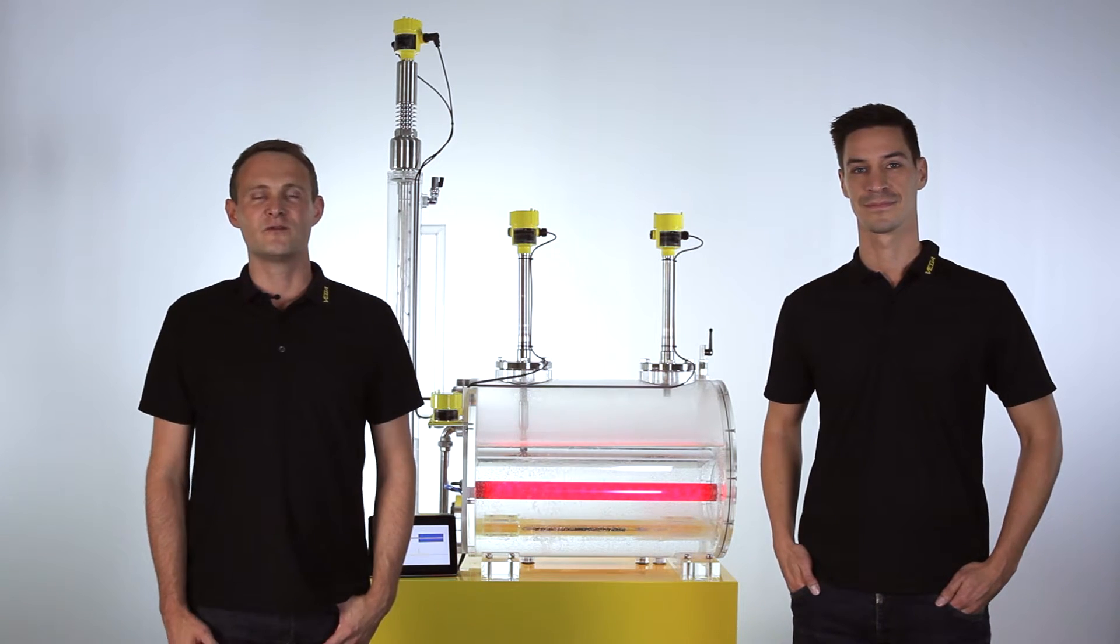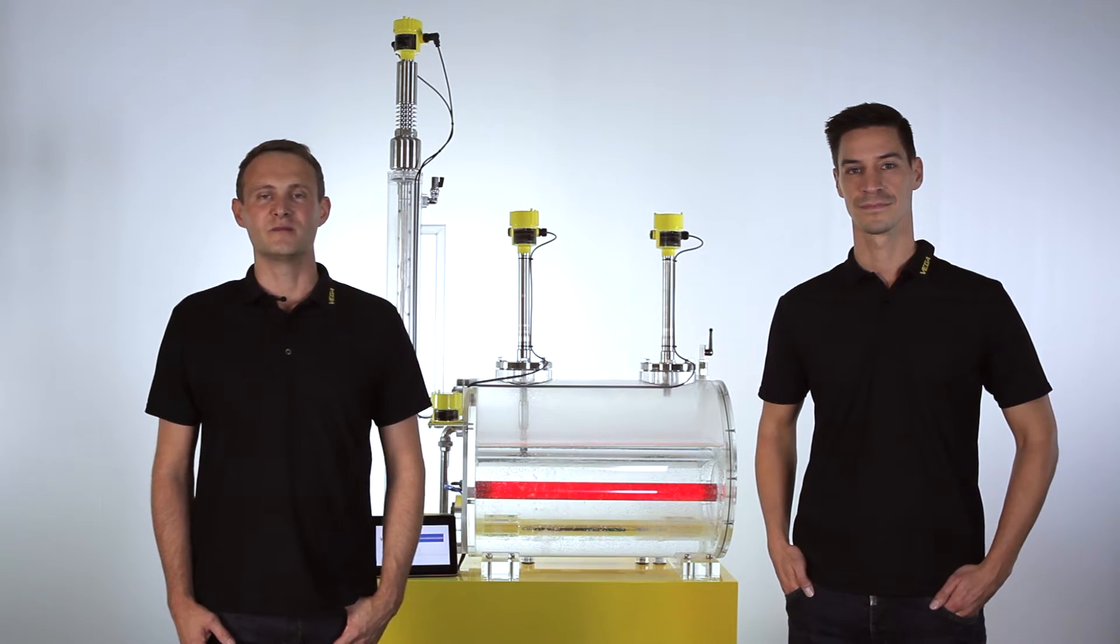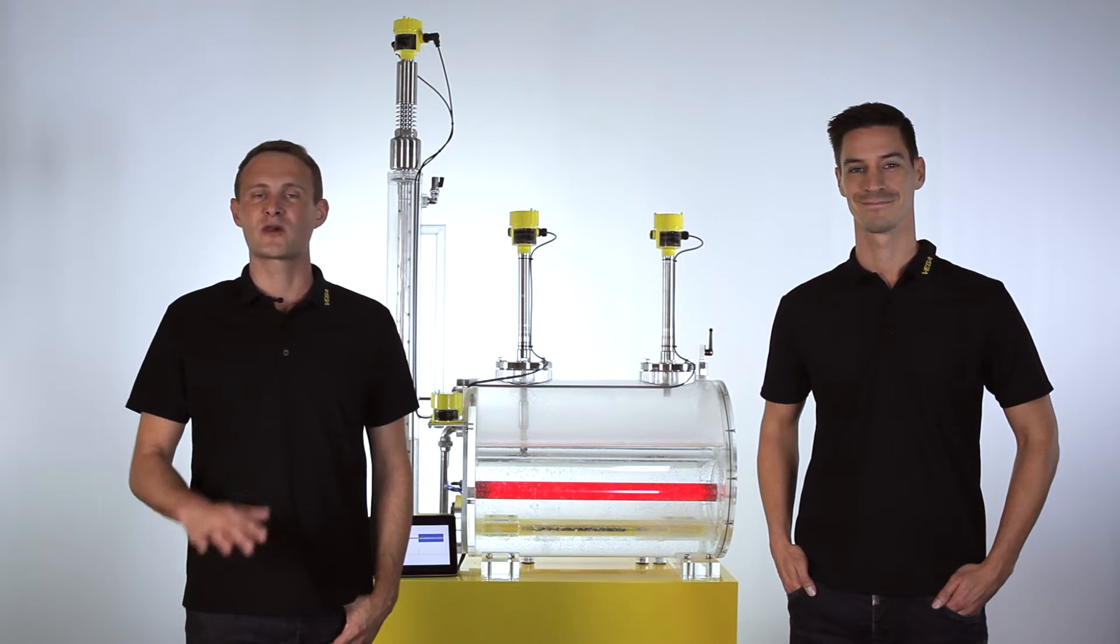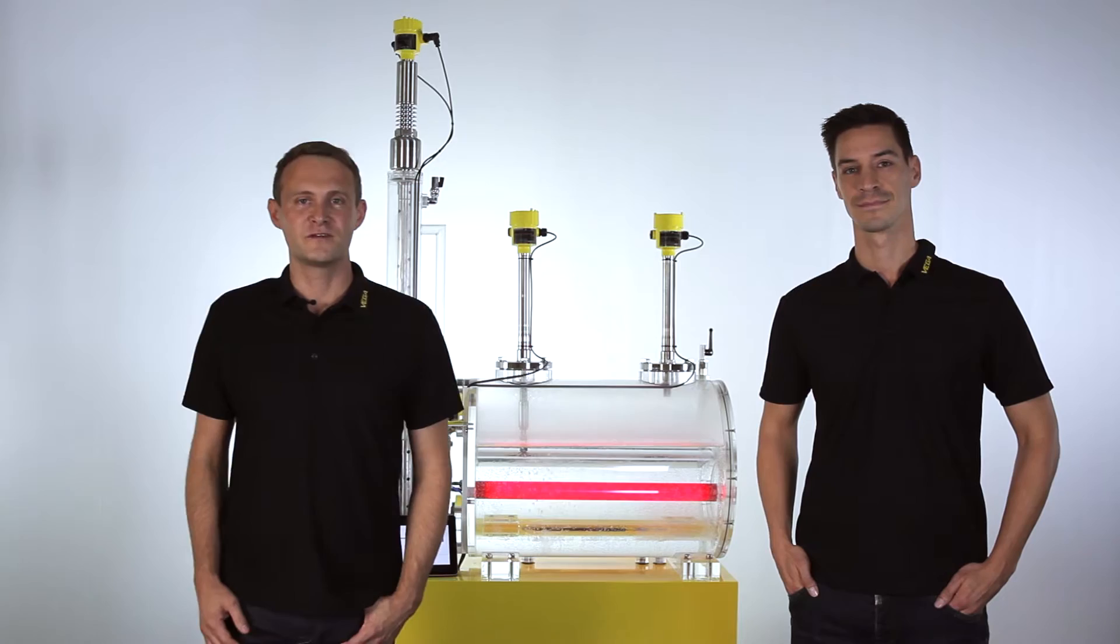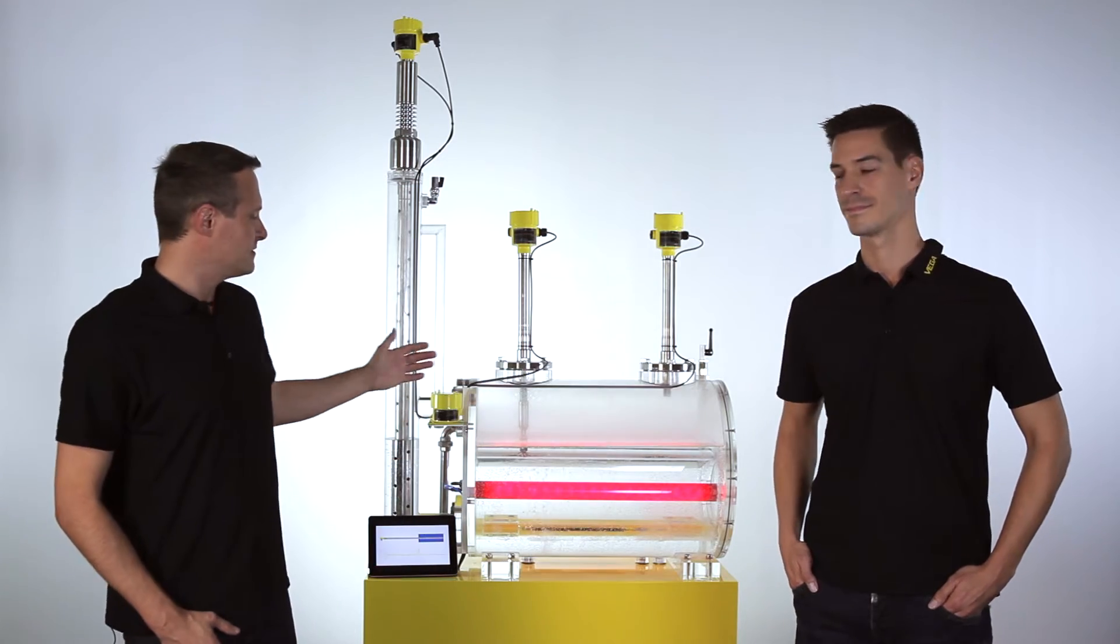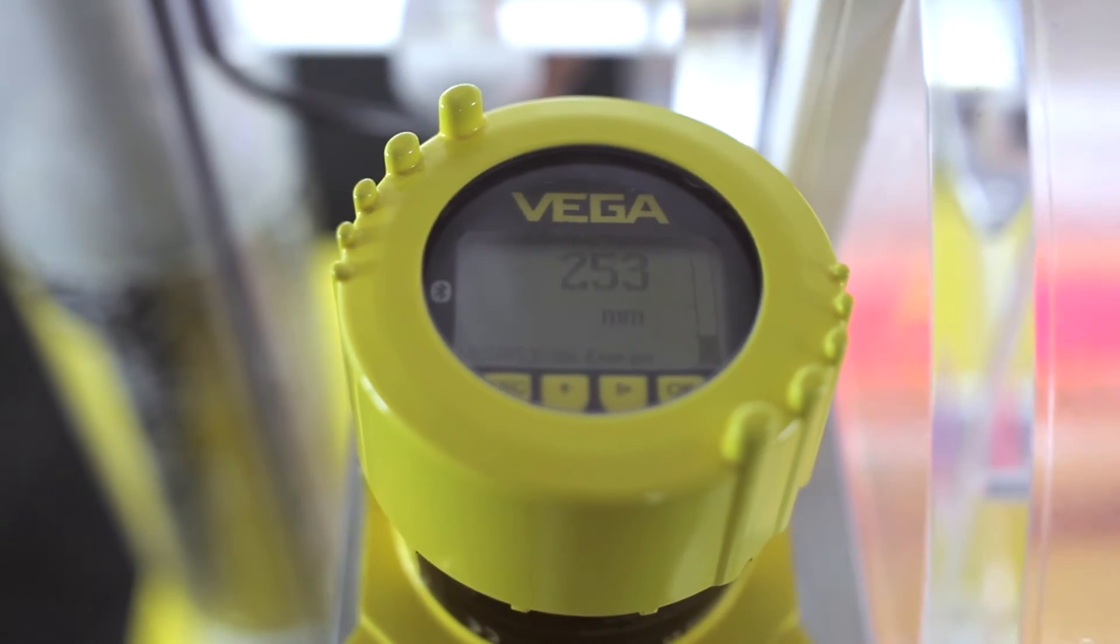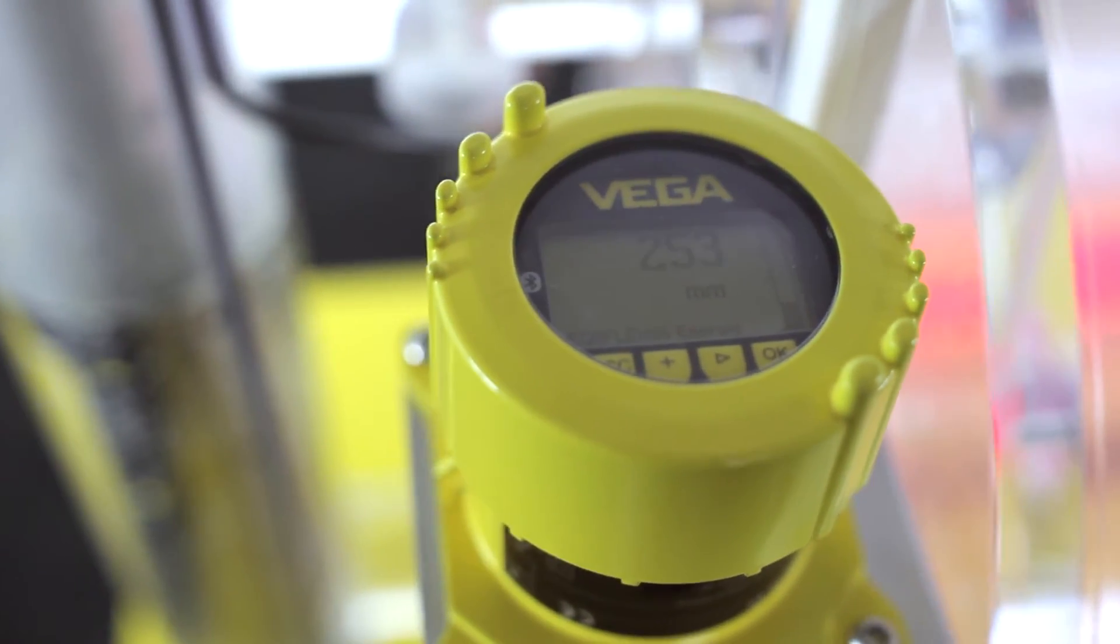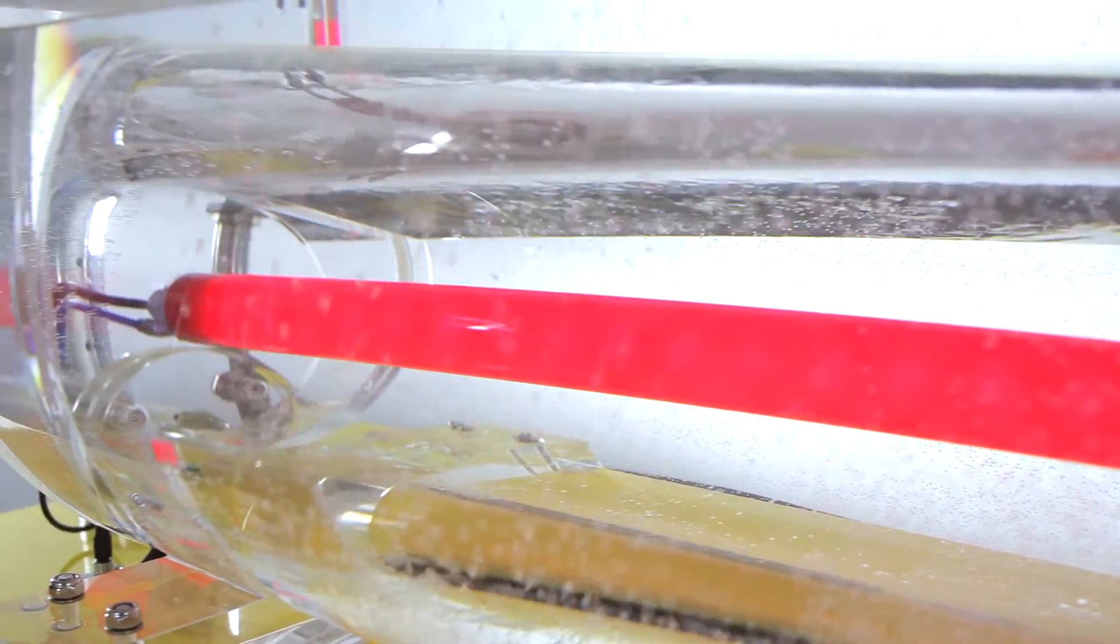Today we would like to show you a complete package for water level measurement in steam boilers, both for level measurement and for limit level detection. Steam boilers, as you can see here in our demonstration unit, are used to produce hot water or steam to use it later on and add it into a process as energy or heat, for example.